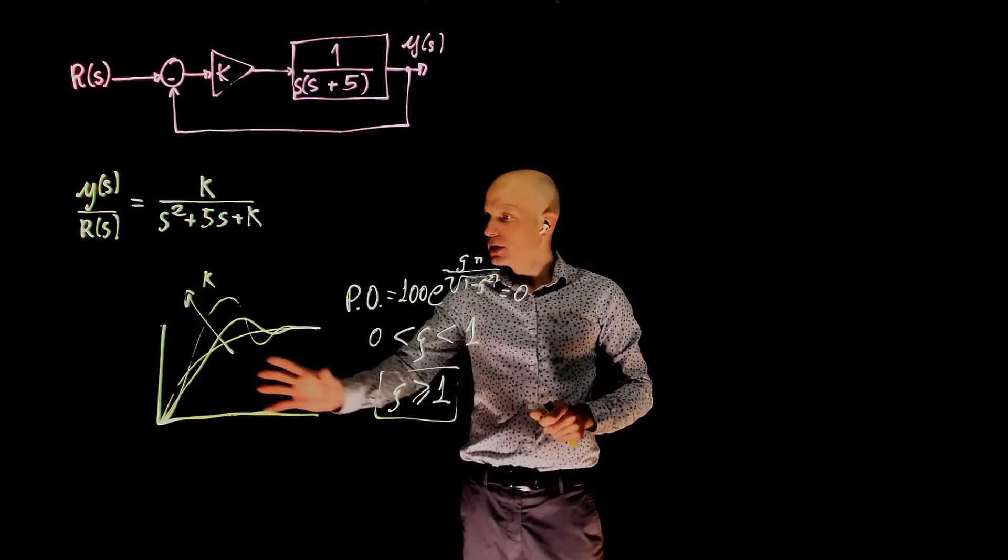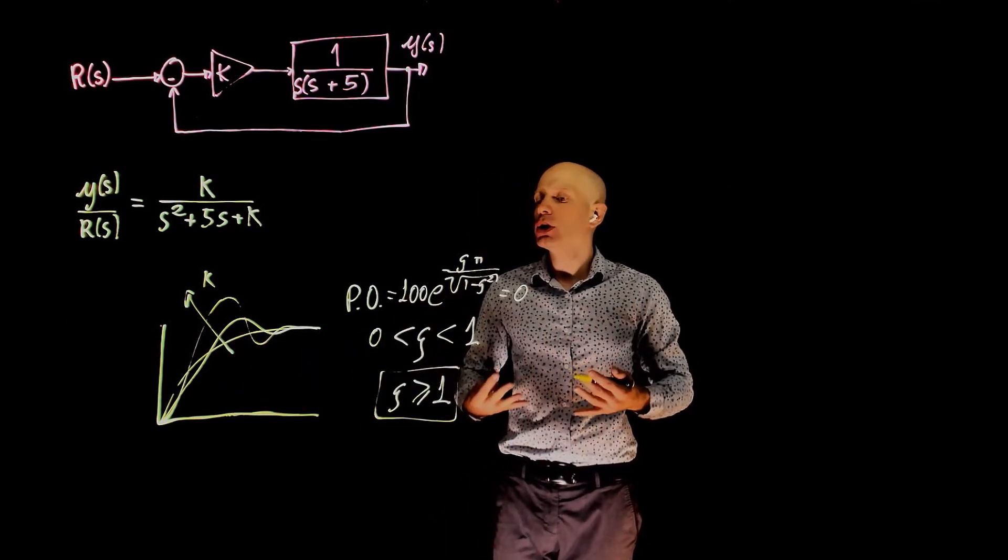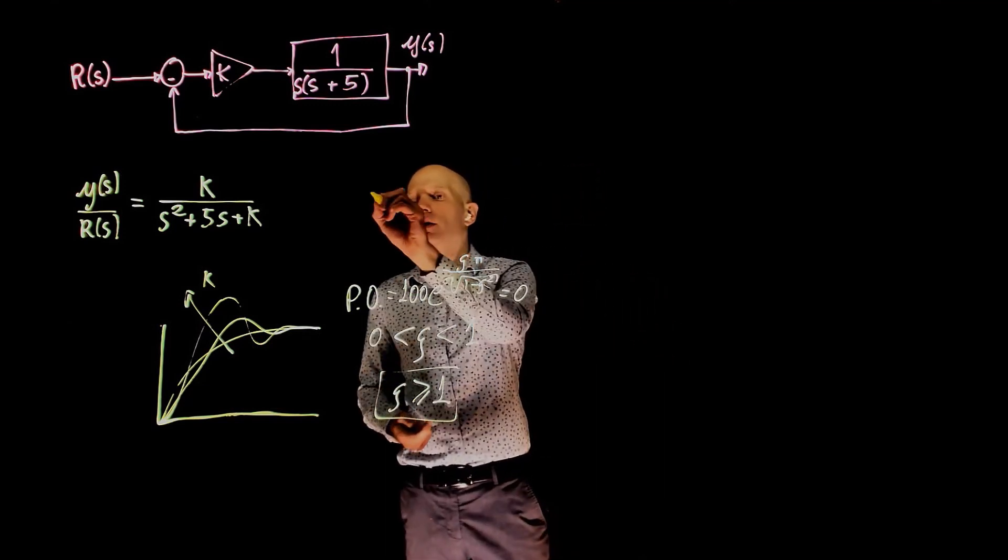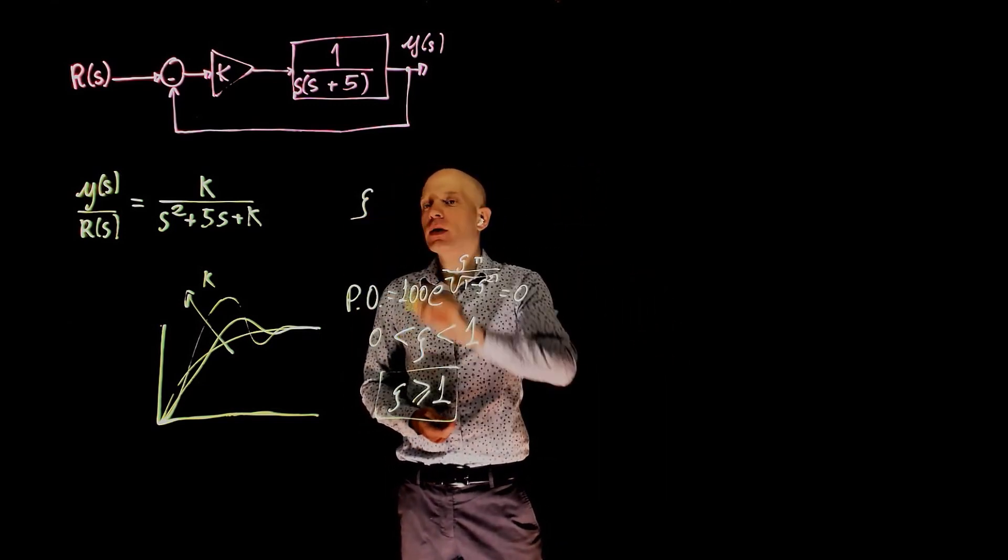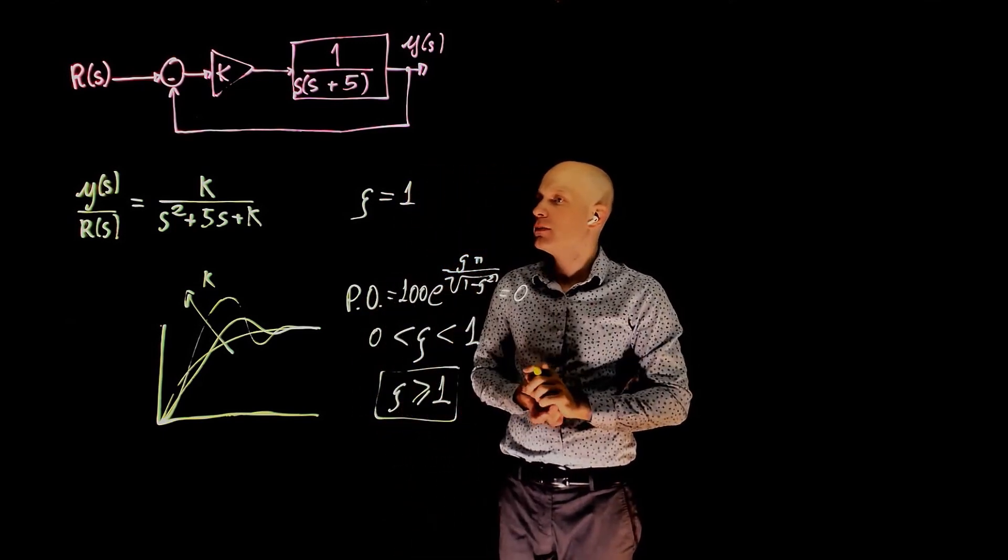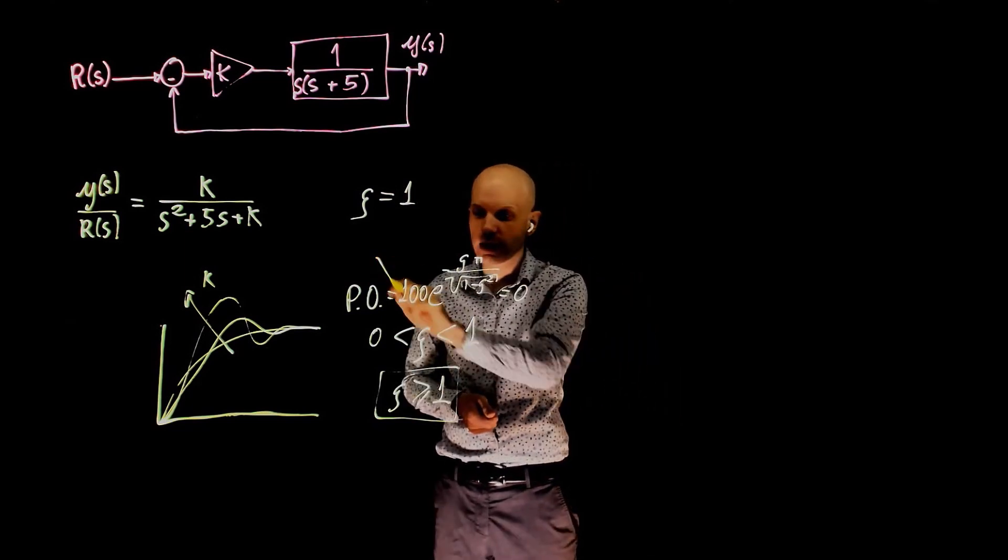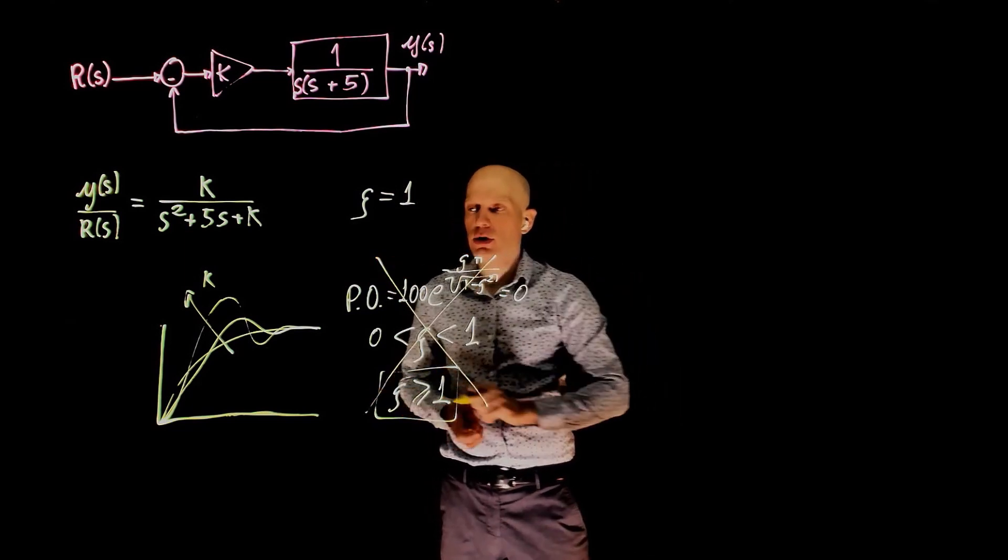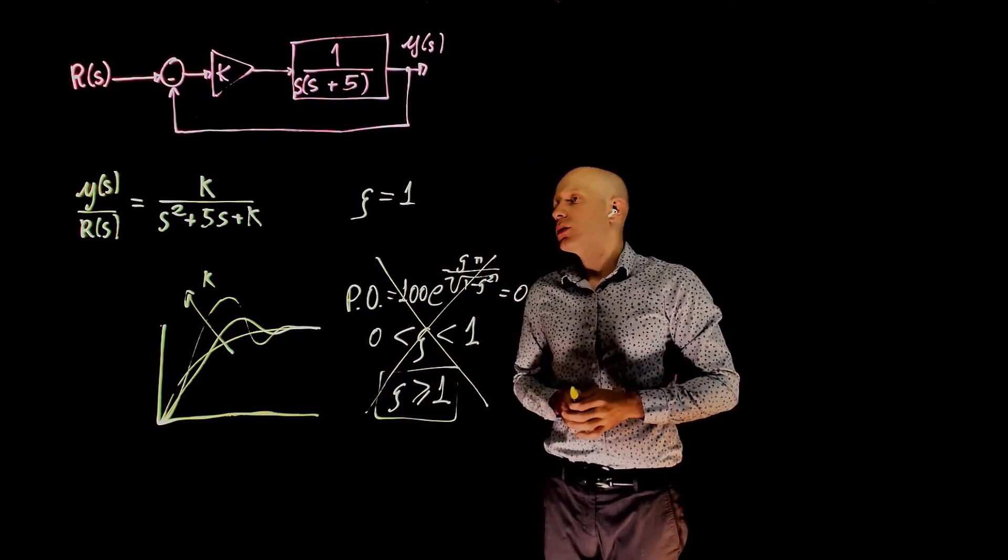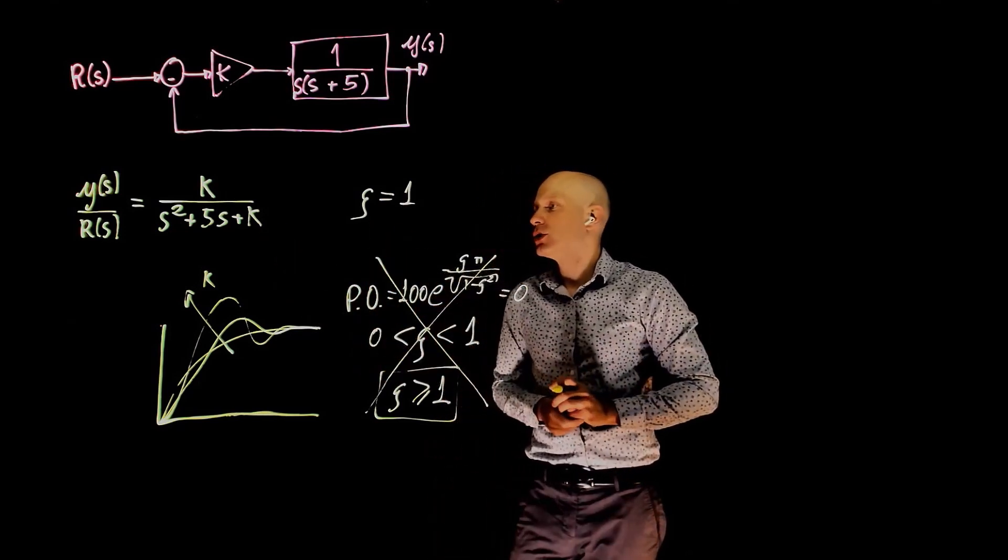If you now want the system to have no overshoot, the condition that we want to meet here is that zeta needs to be equal to 1. That's a critically damped system. Anything smaller than that will lead to oscillations. So this does not work. Now, if you want zeta to be 1, we have to find a value of k that results in a damping ratio of 1.